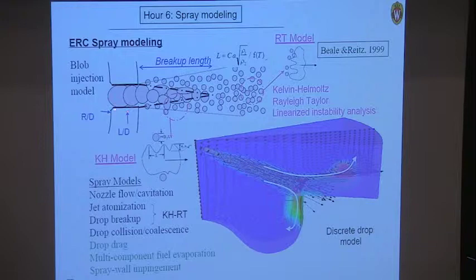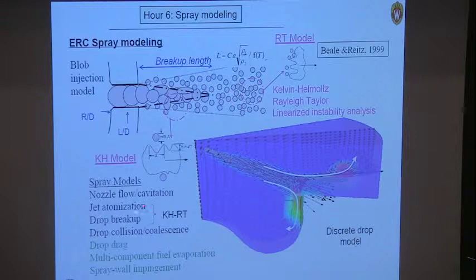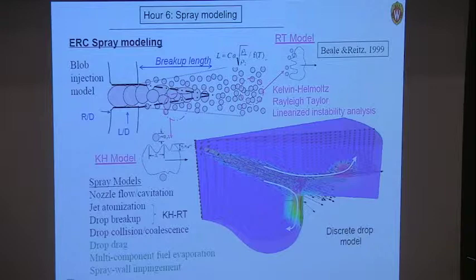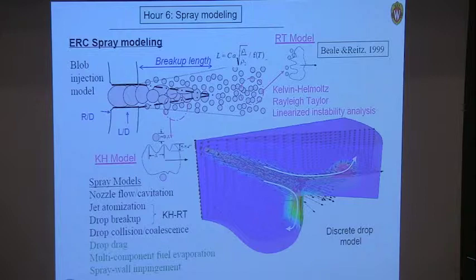That's how we model a spray: first look at the nozzle flow using dimensions of the nozzle, its inlet radius of curvature, and length-to-diameter ratio. The atomization model produces initial droplets from the blobs. Then we have breakup, collision, coalescence, droplet drag, fuel vaporization, and spray-wall impingement. Here's a picture of a simulation showing velocity vectors associated with the injected spray and droplets impinging on a piston.